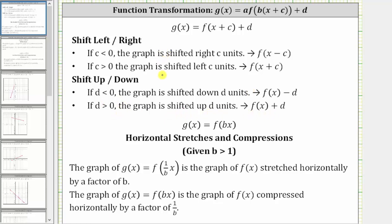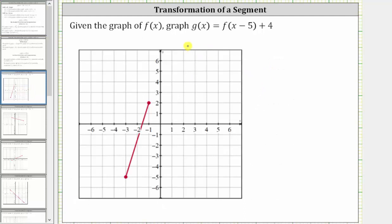Notice how the shift left or right is in the opposite direction we might think. When we have subtraction, the graph is shifted right. When we have addition, the graph is shifted left. So going back to our example, because g of x is equal to f of the quantity x minus five plus four, the x minus five indicates a shift right five units, and the plus four on the end indicates a shift up four units.